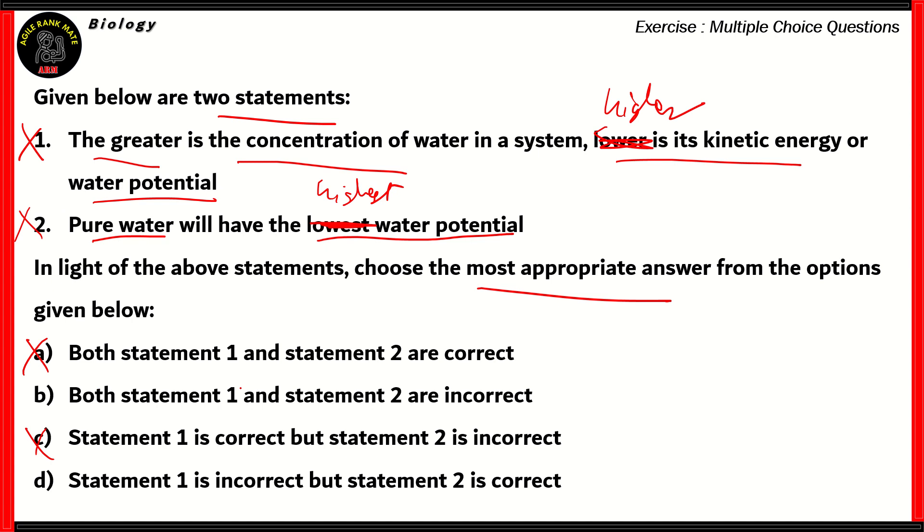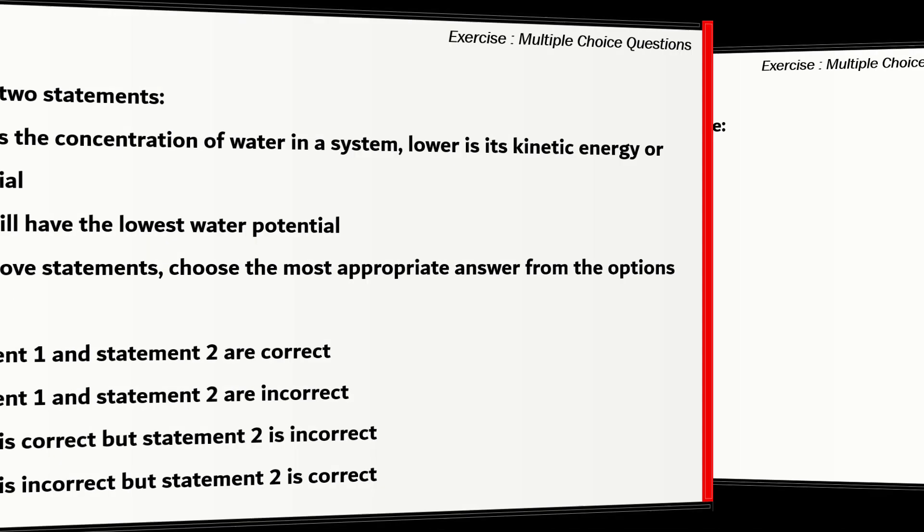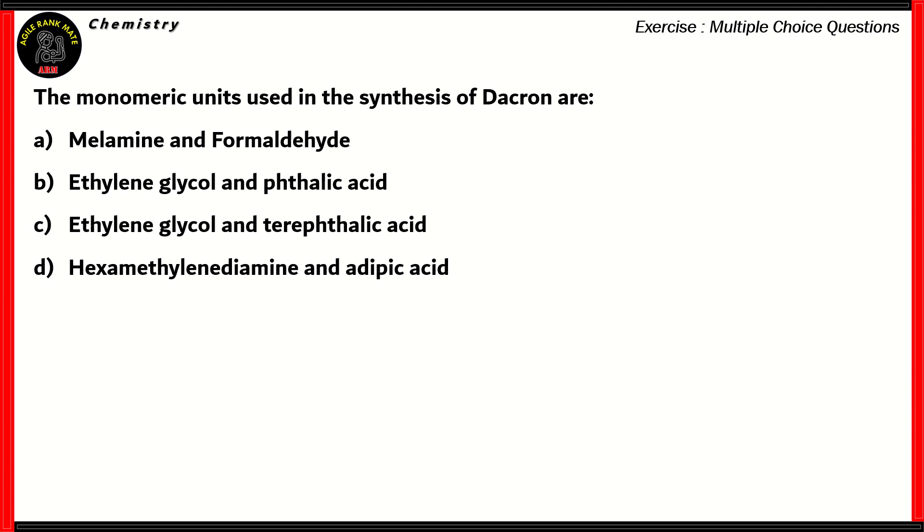So the option where both statements are incorrect, that is option B would be the right answer. The other options are now incorrect. Option number B is the right option. Now let's look at a question from chemistry.